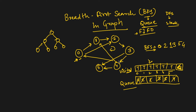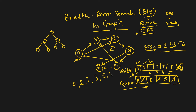We take out 4, print 4. From 4 we can go to 0 (already visited) and 1 (already visited). At this point our queue is empty and all nodes are visited. So our final BFS is: 0, 2, 1, 3, 5, 4.